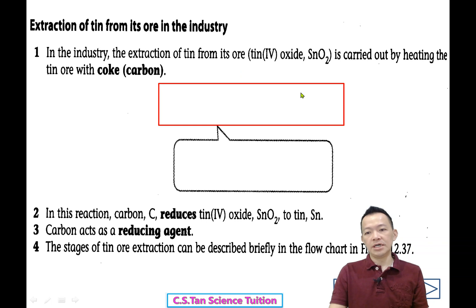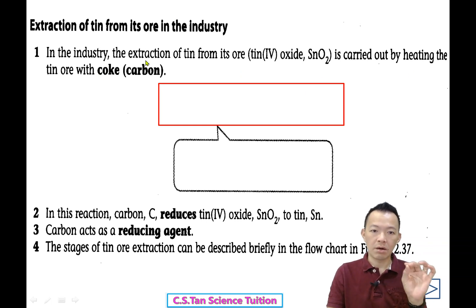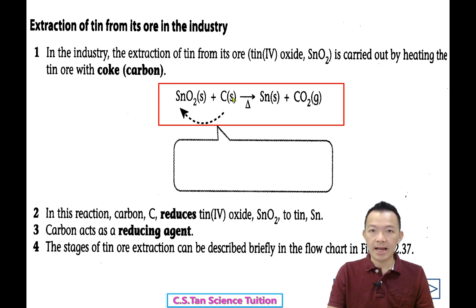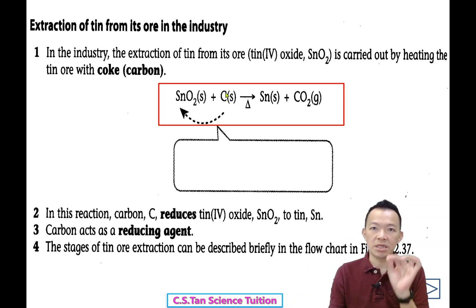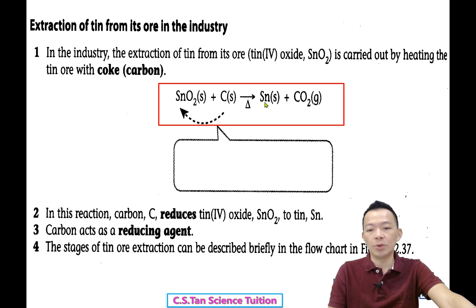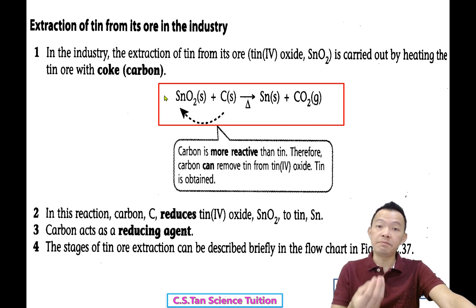In the industry, the extraction of tin from its ore is carried out by heating the tin ore with coke or carbon. Between tin and carbon, who is more reactive? Carbon is more reactive — it has a higher position compared to tin in the reactivity series of metals. So in this case, carbon is going to reduce the oxygen oxide from the tin, and finally become tin only, plus carbon dioxide.